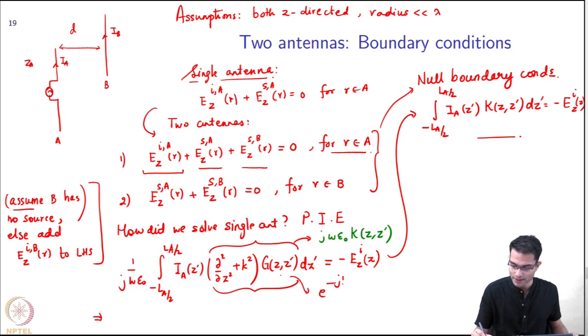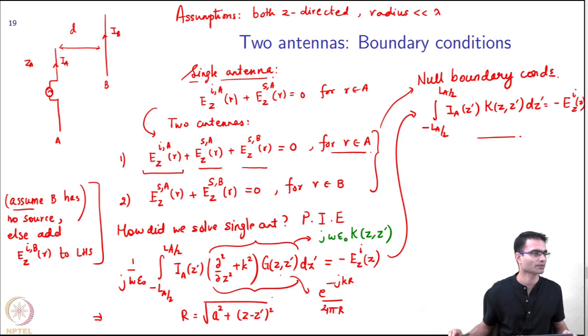And here what was my G? It had what kind of terms? It was e^(-jkr)/(4πr), and r was of the form square root of a² + (z-z')². We have already seen this before. It is a function of z and z'.